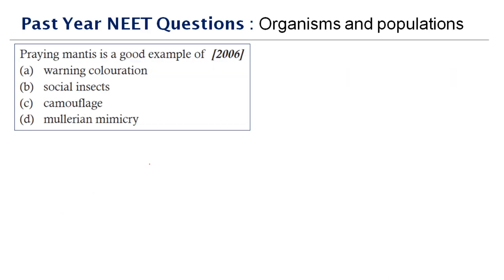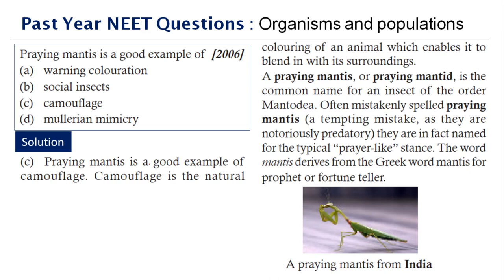Next question: praying mantis is a good example of — praying mantis is an insect of the order Mantodea. If you see its image, it clearly looks as though it is praying due to the position of its legs. Praying mantis is a good example of camouflage — a natural coloring of an animal that enables it to blend in with its surroundings. The right answer is option C.